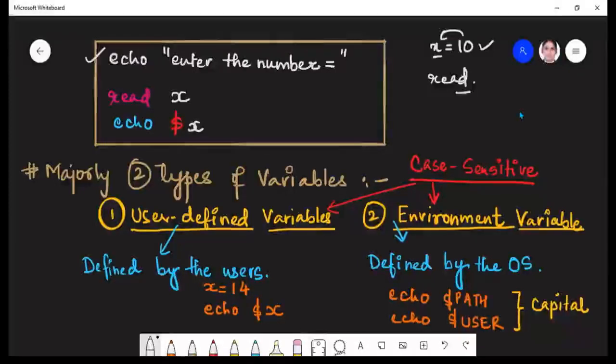So how is it going to function? Let's see. So first you are going to use this echo command in which you have displayed a message that enter the number. So you will be using this read command. And after that, you are going to write the name of the variable that is X.